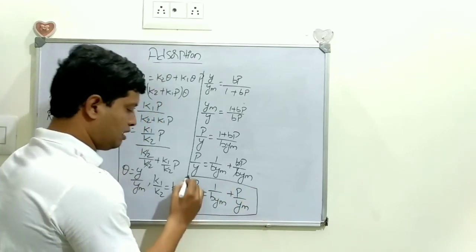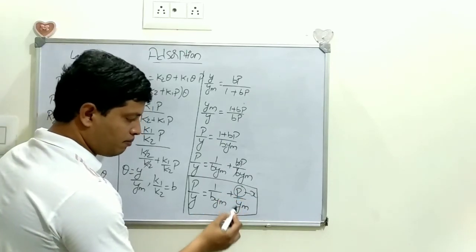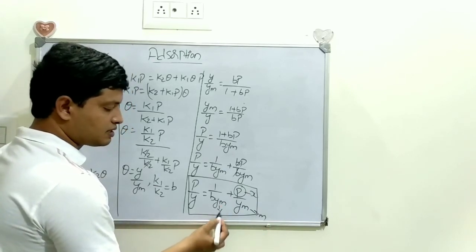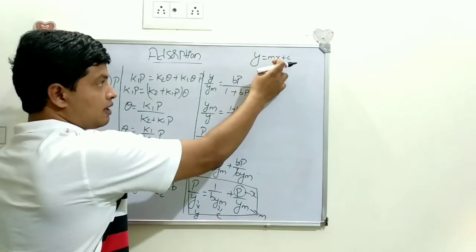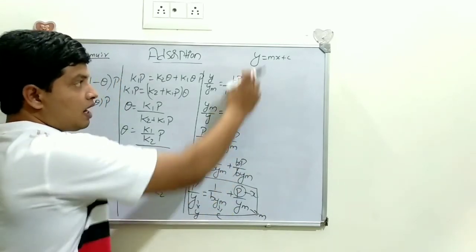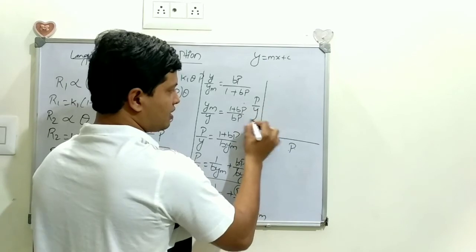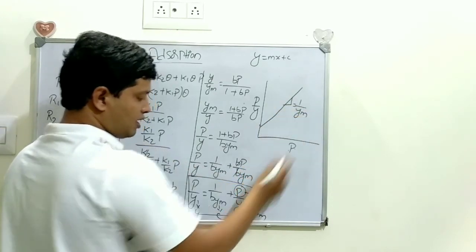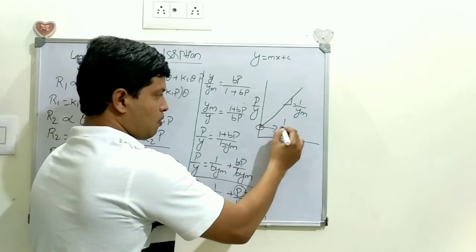This equation is called the Langmuir equation. If you plot P on the x-axis and P/y on the y-axis, you get a straight line. Comparing with y = mx + c: the slope is 1/ym and the intercept (where the graph touches the y-axis) is 1/(b·ym).